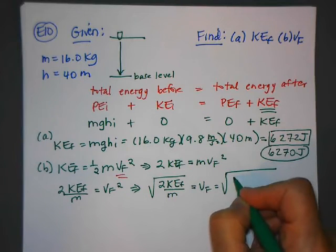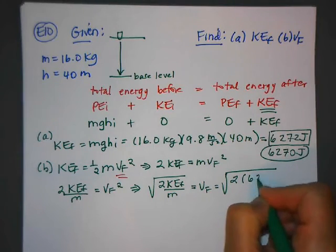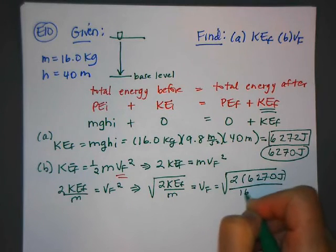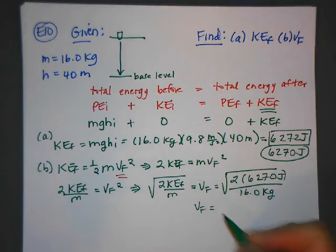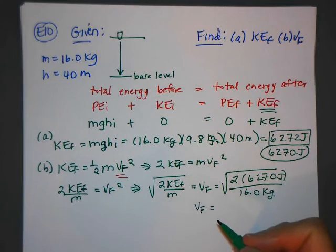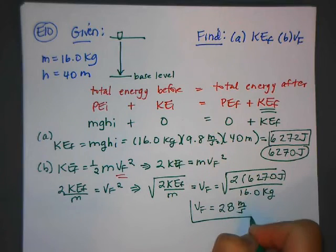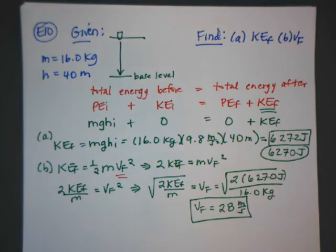So that's equal to 2 times 6270 divided by 16. So VF is equal to about 28 meters per second with two significant figures. So again, we just have to remember that the total energy before is equal to the total energy after.